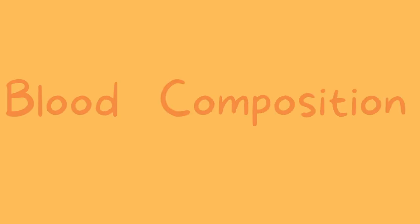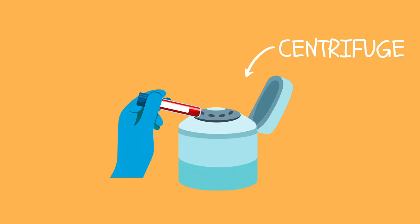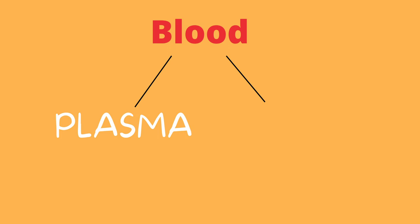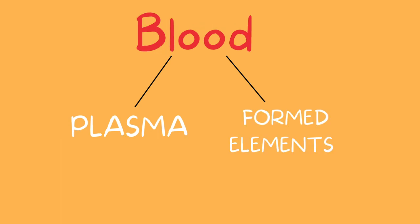Blood composition refers to the elements that make up blood. If we take a sample of blood and put it in a machine called a centrifuge, the blood gets spun around at a super high speed, which loosens the components of the blood and they will settle separate from each other. Once settled, we'll notice that the blood has two major components: the plasma and the formed elements.